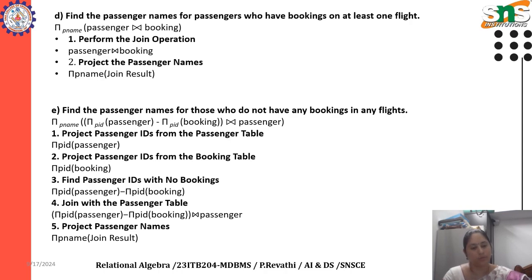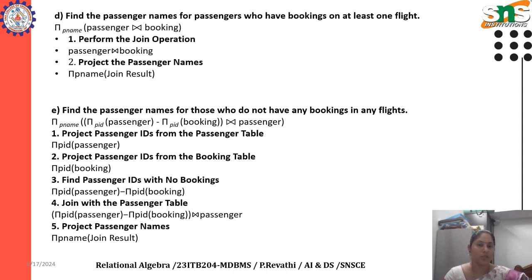Finally, project passenger names using projection symbol on passenger name of the join result. The full answer is: projection P name of ( projection PID of passenger minus projection PID of booking, joined with passenger ).